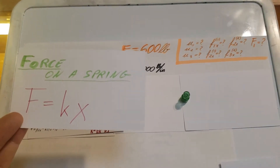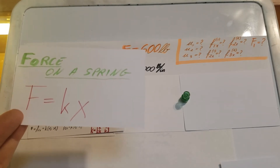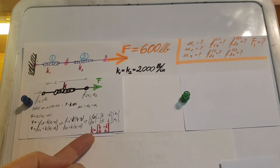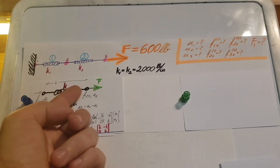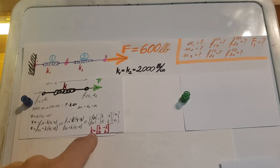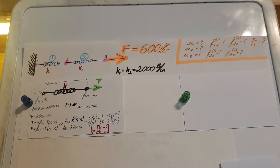The main formula we're going to rely on throughout this problem is the force on a spring: F equals Kx. Here's a quick deduction of the stiffness matrix K, where for one element — and this is the part you need to remember because we're going to need it over and over again — K equals the stiffness matrix: K, negative K, negative K, K. Remember this one.